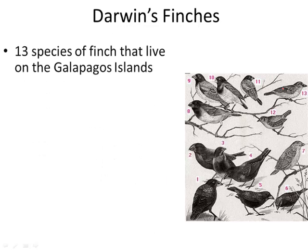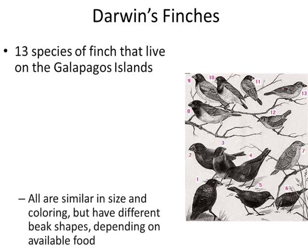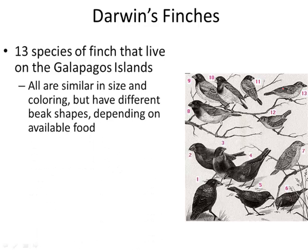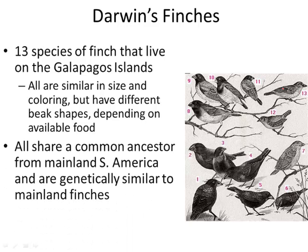We can see speciation — the formation of new species — in Darwin's evidence from finches. There are 13 species of finches on the Galapagos Islands, all similar in size and coloring, but with different beak shapes because of different available food on different islands. Even so, they all evolved from a common ancestor from the mainland of South America, as they are genetically similar to those mainland finches.